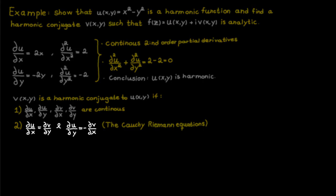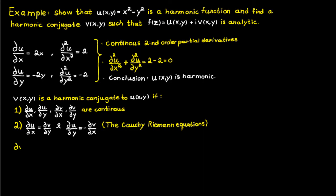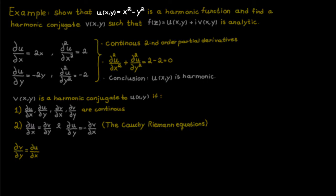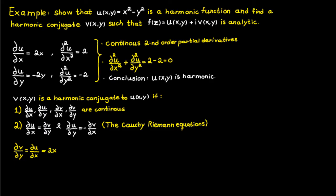From the Cauchy-Riemann equations we get that the partial derivative of v with respect to y should equal the partial derivative of u with respect to x. Since the partial derivative of u with respect to x is simply 2x, by integrating both sides with respect to y we get that v equals 2xy plus some function depending on x.